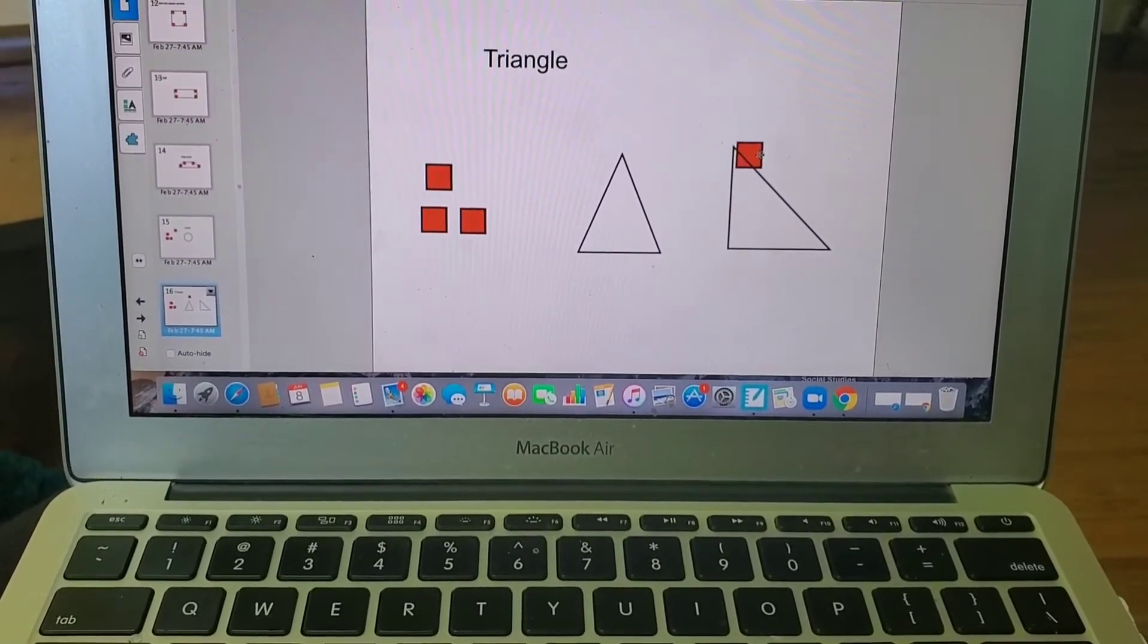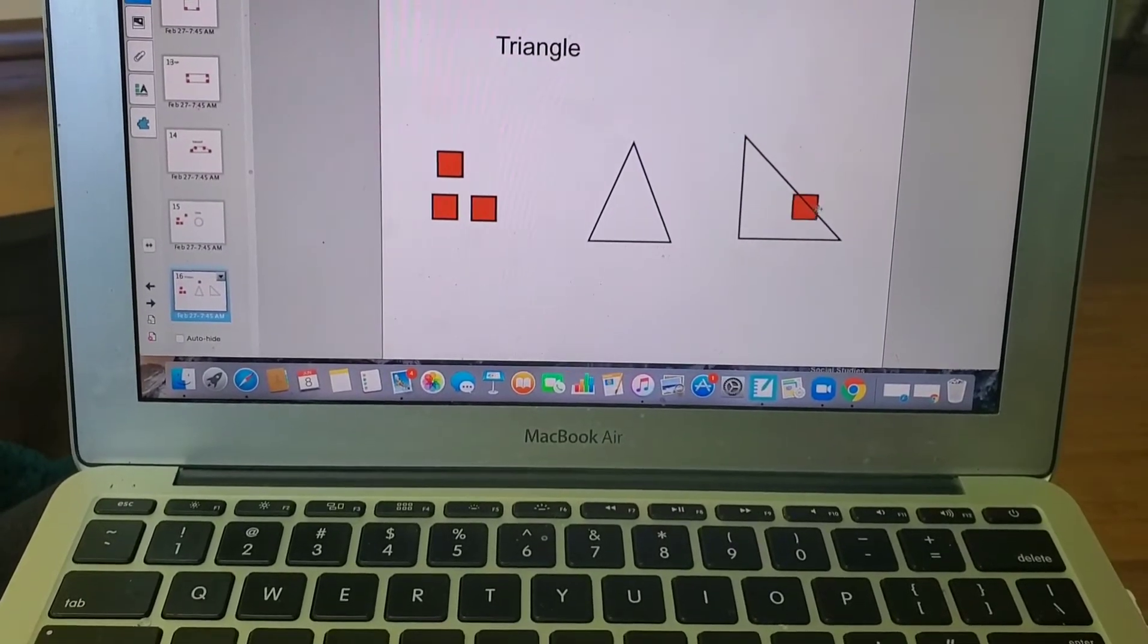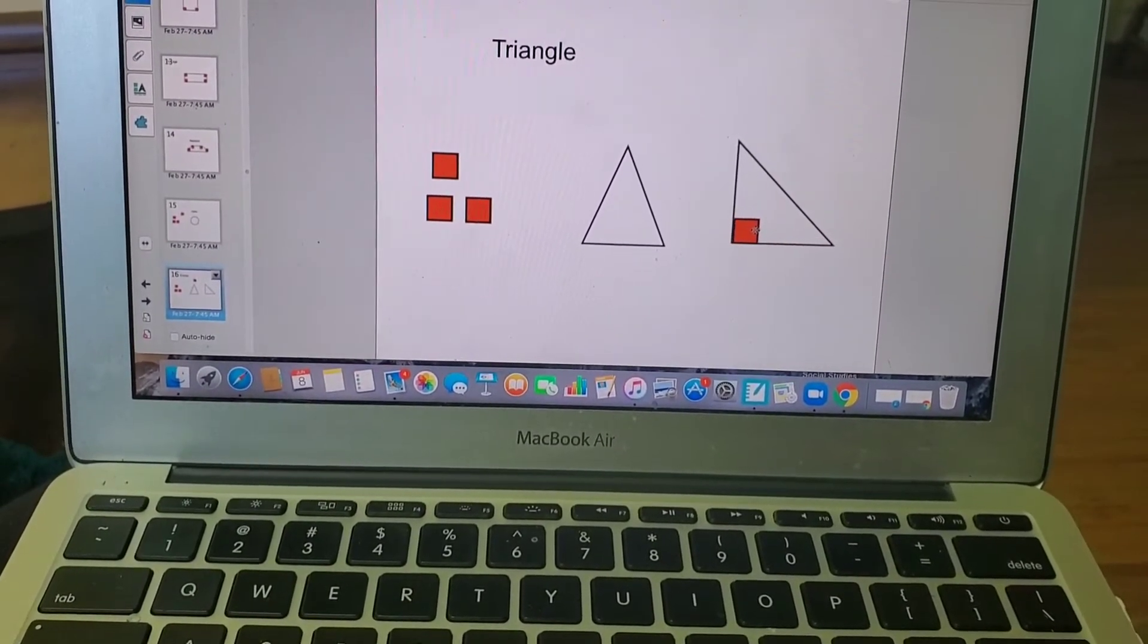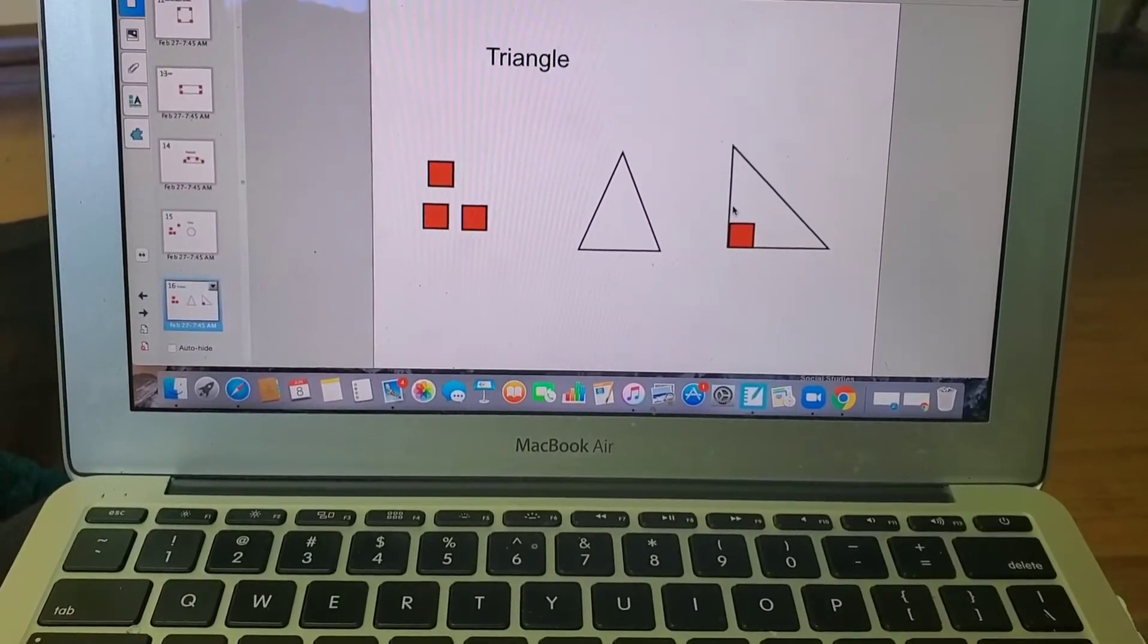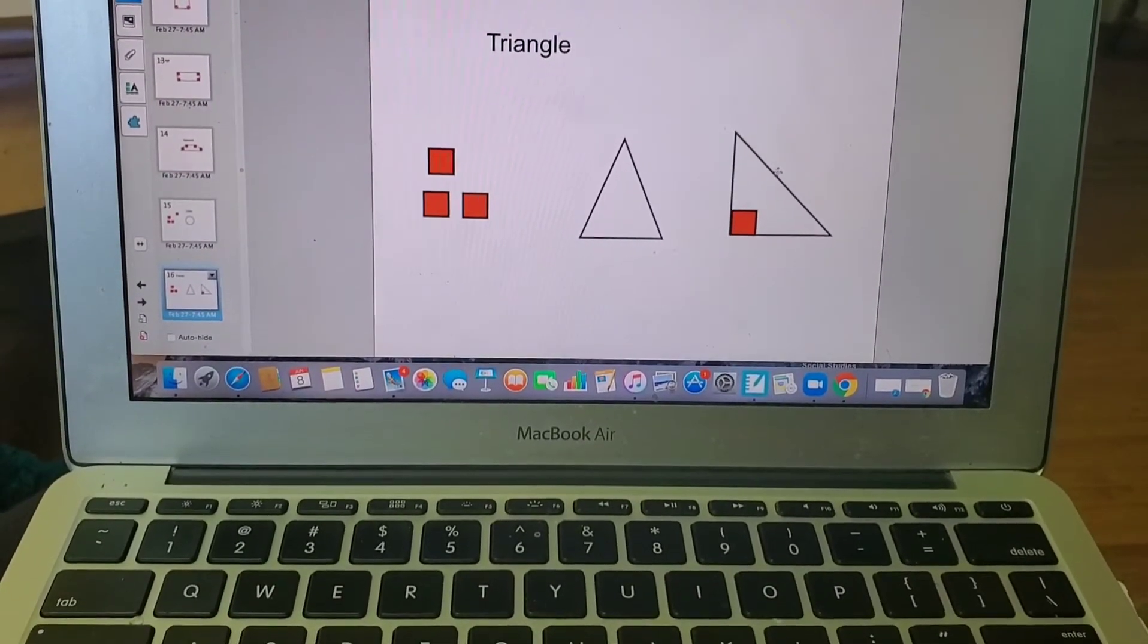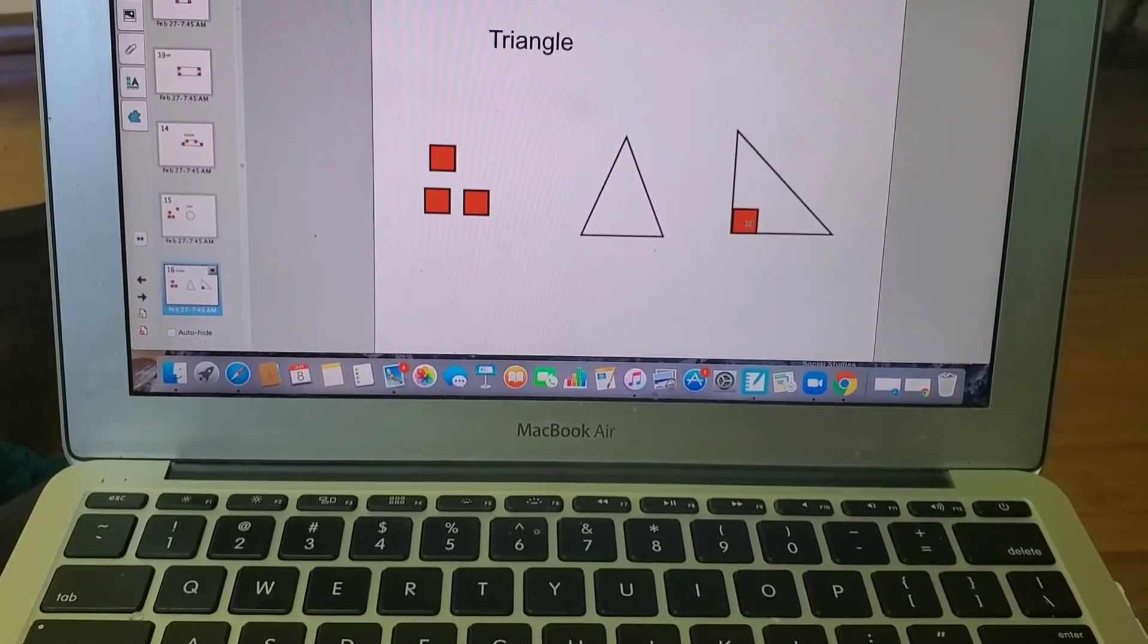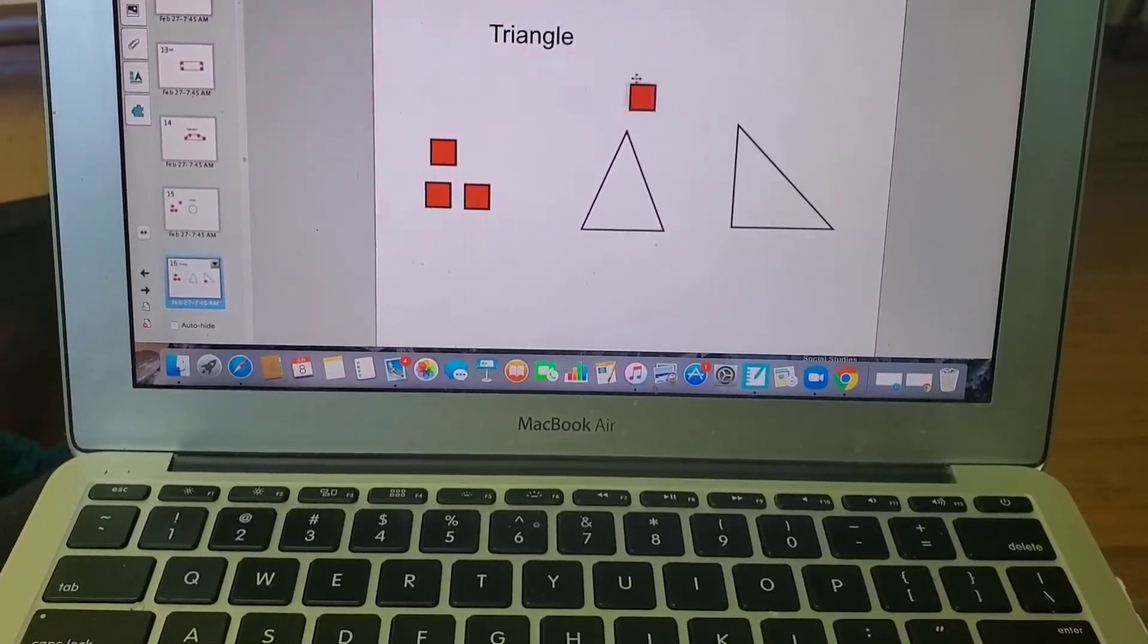What about this triangle? Let's see. Nope, that corner doesn't. This corner doesn't, but this corner does! So when a shape has three sides and a square corner, you know it's a right triangle. That is so cool!